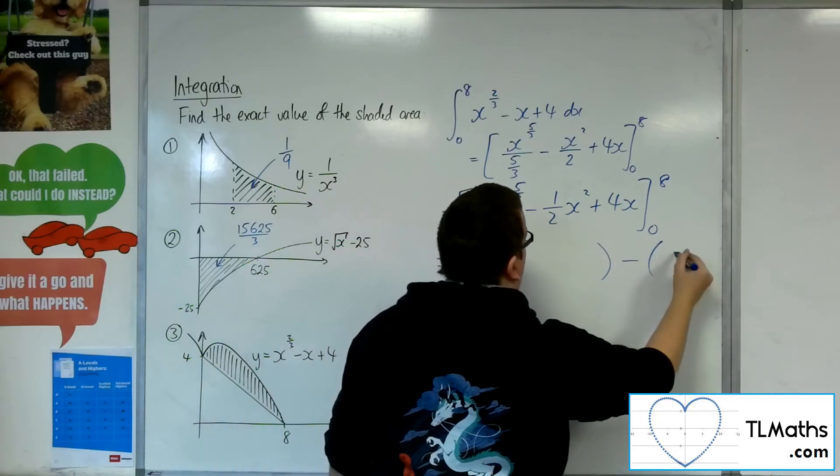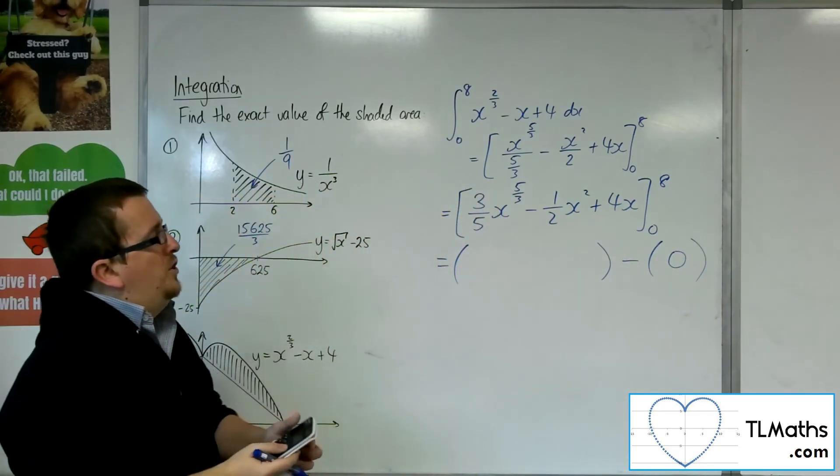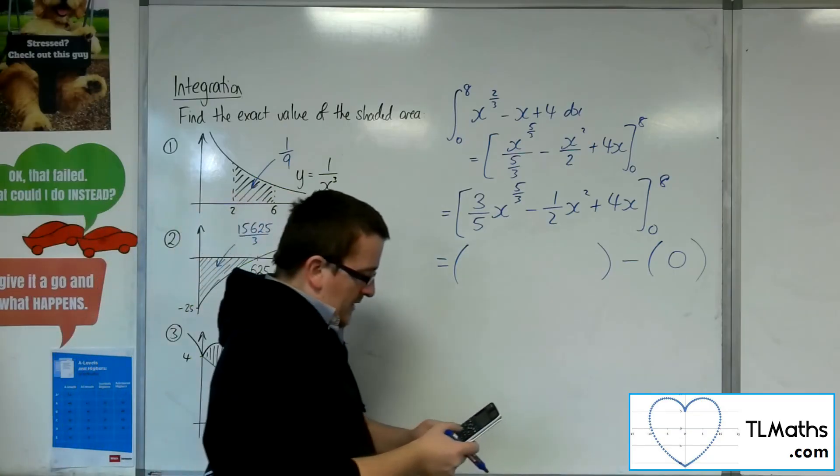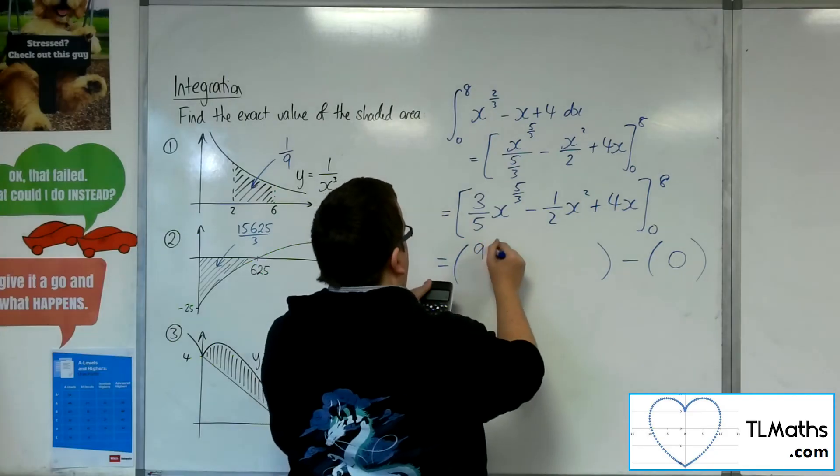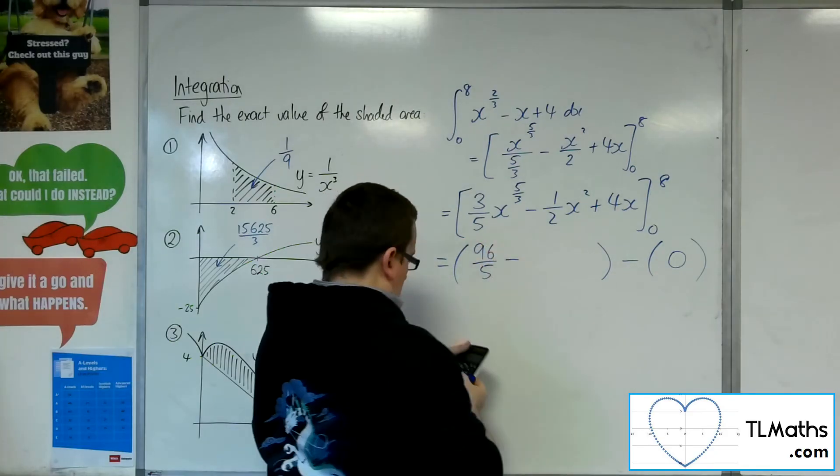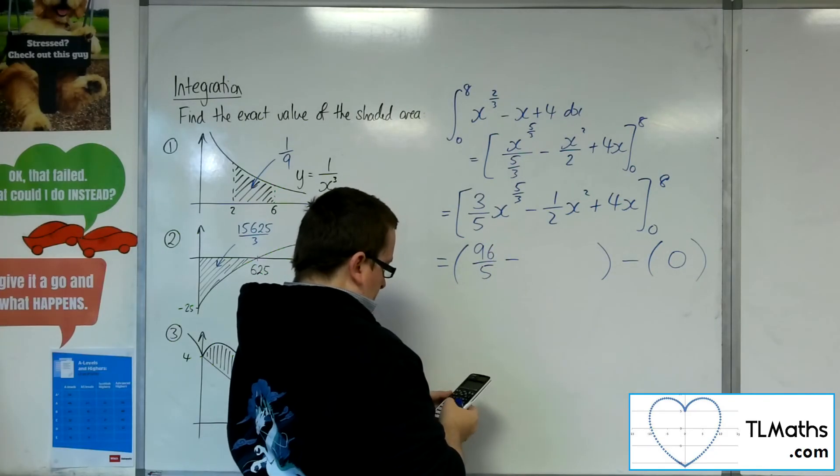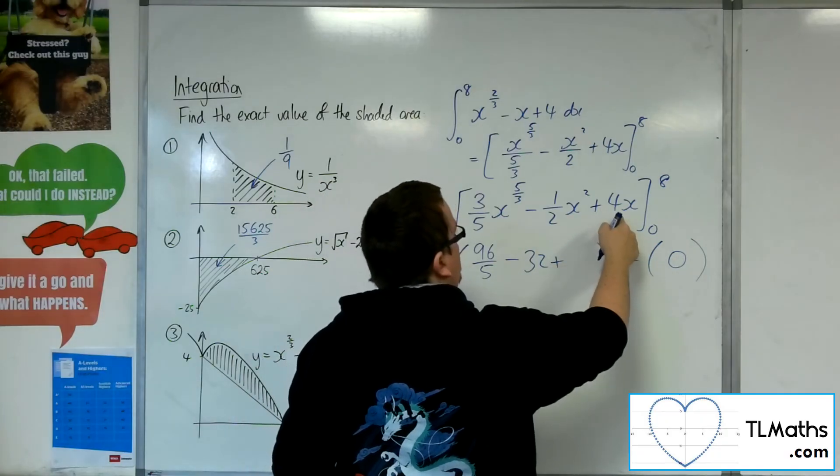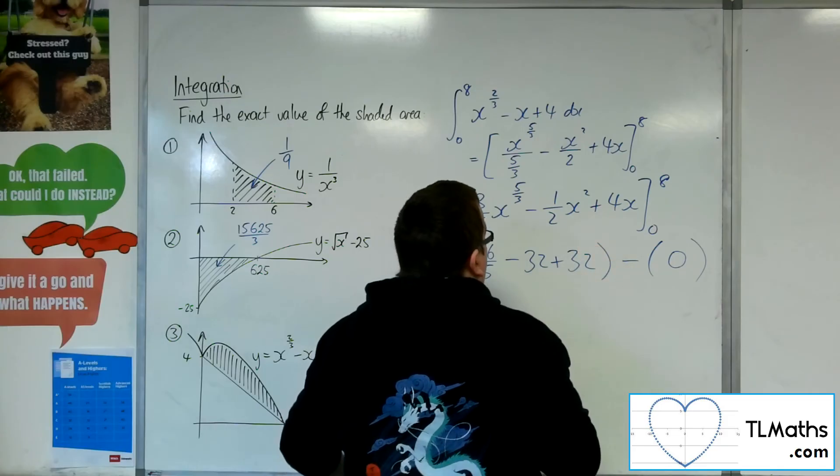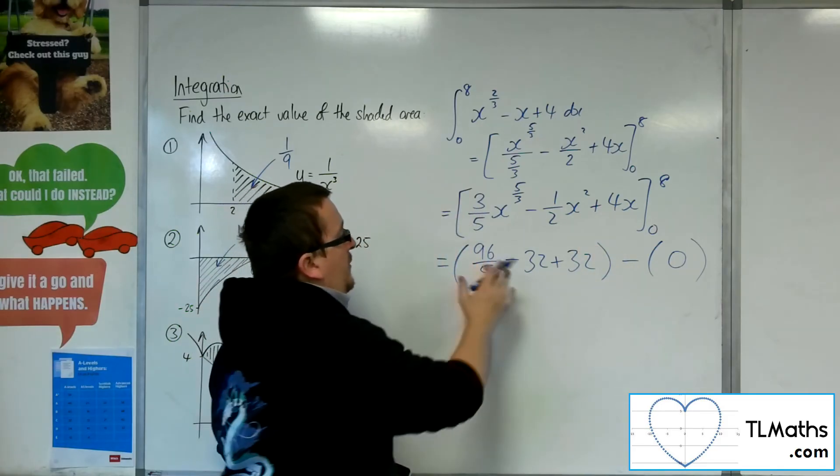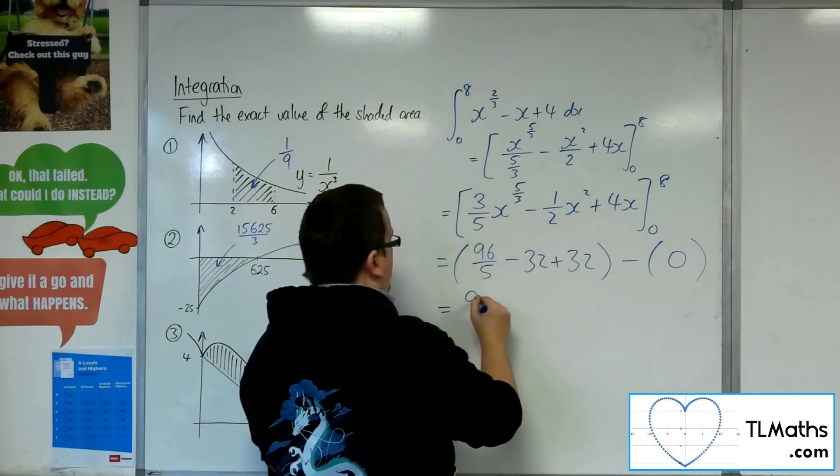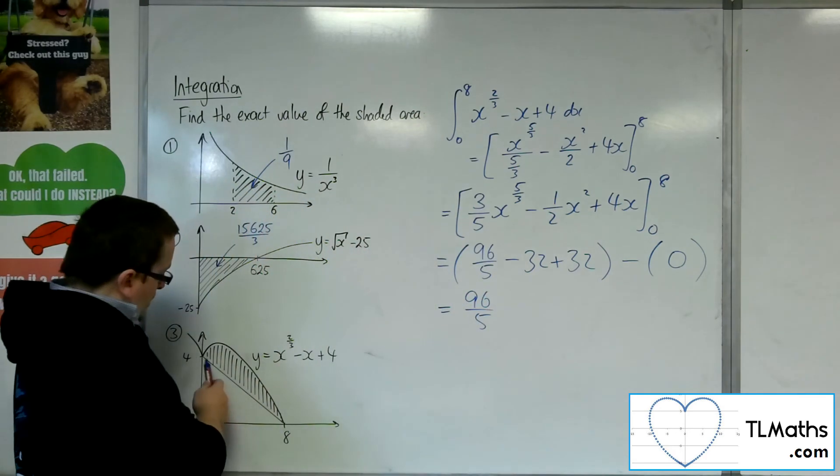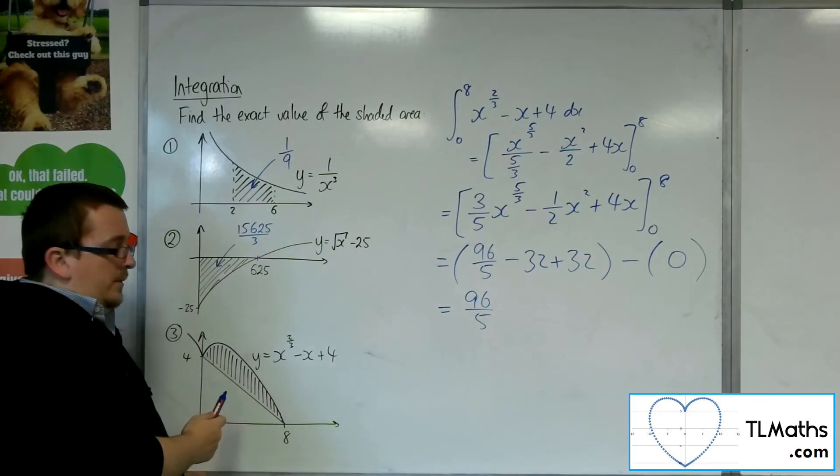So the second bracket is just going to be 0, substituting in. So substituting in the 8, so 3 fifths times by 8 to the 5 thirds is 96 fifths. Then we've got 1 half times, well, 64, so 32. And then 4 lots of 8 is 32. So the minus 32 and the plus 32 cancel, so I'm left with 96 fifths. So that is the area between the curve and the x-axis.